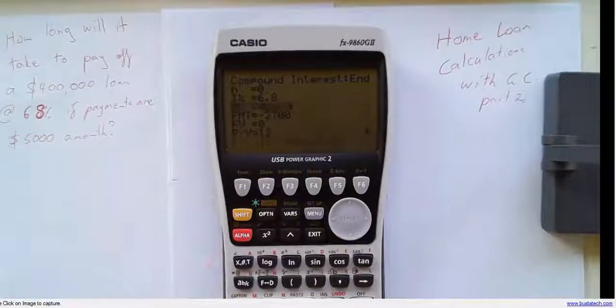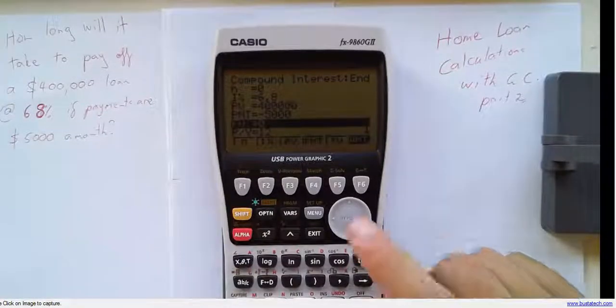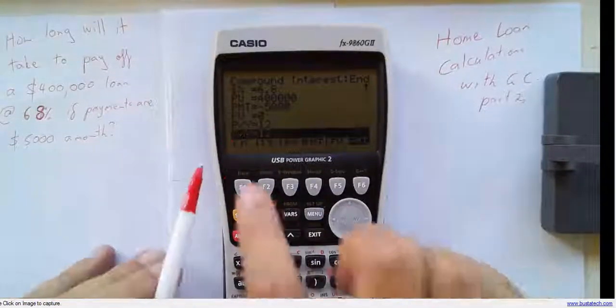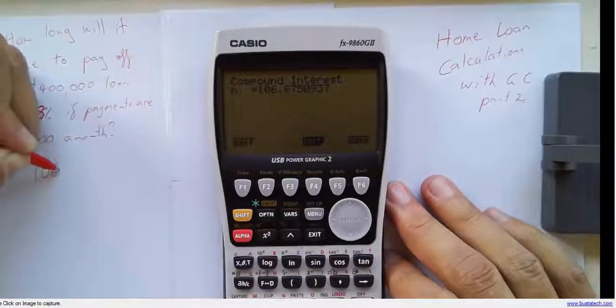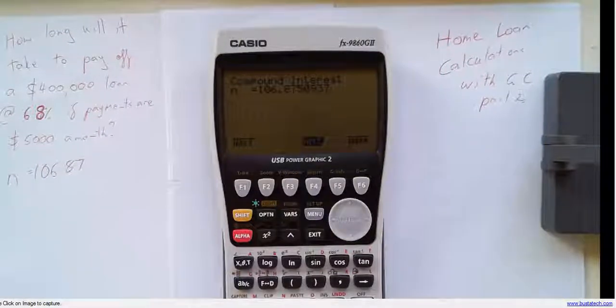So, interest rate 6.8%, present value $400,000, payment negative $5,000. What's the future value? Zero because we're going to pay it all off. We want to know how long it's going to take. It's going to take 106.87 months.